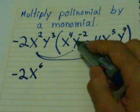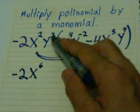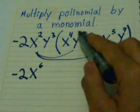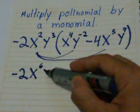And then y third times y negative 2, you add the exponents. So 3 plus negative 2 is 1, so here is going to be only y.